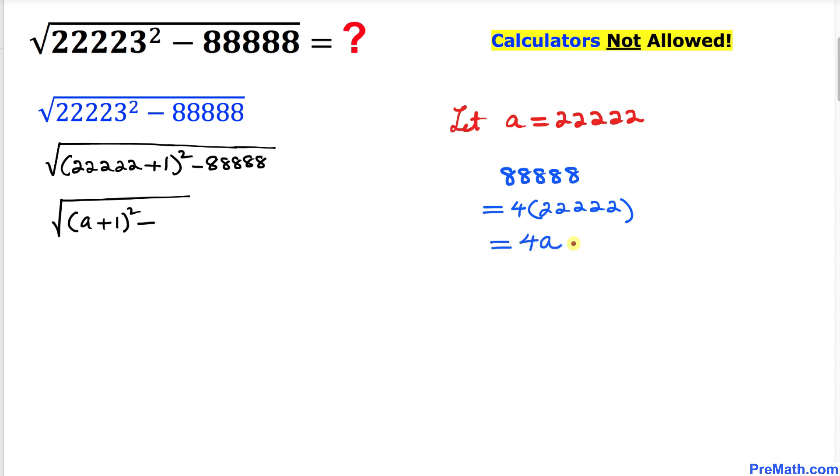So therefore this could be written as 4 times A. Therefore this is equal to 4A, so we can write over here minus 4A.